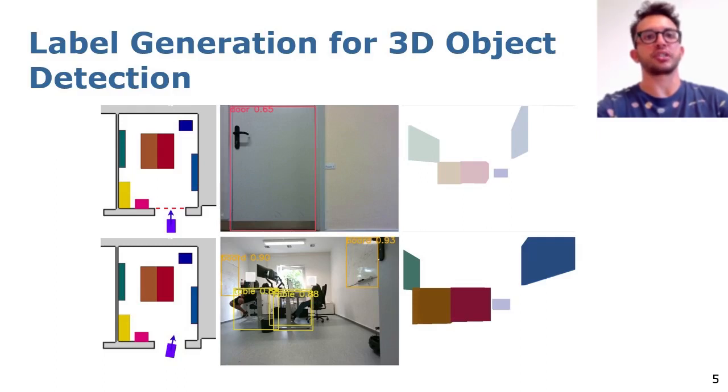In the top row, the 2D object detection detects a door, and none of the objects in the 3D map. Therefore, no 3D annotations are generated, and colors are faded.